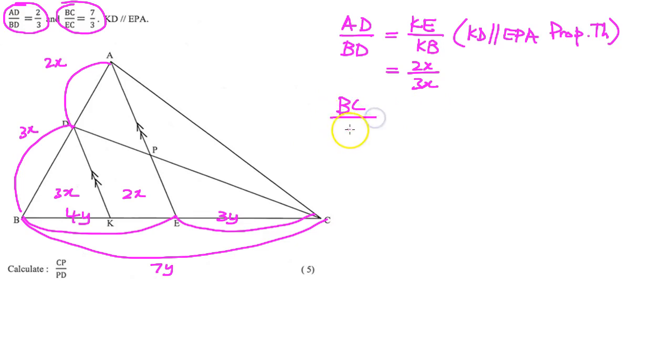In our next step, we know that it is given to us that BC over EC is equal to 7 over 3, and we call it 7y over 3y. We are realizing this statement because we want to show the calculation of BE, which is equal to 7y minus 3y equals 4y.